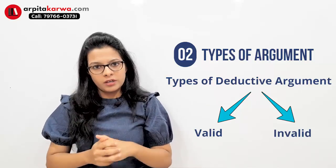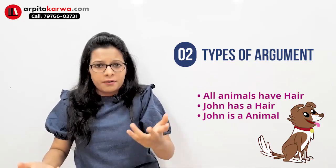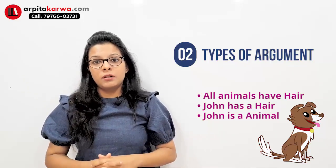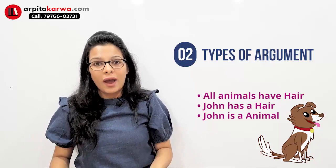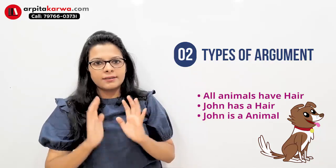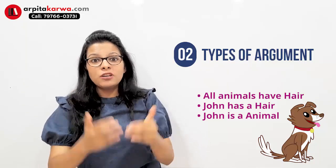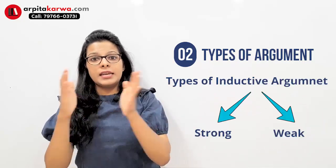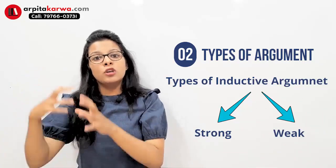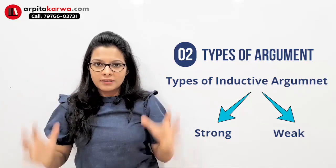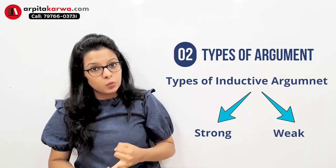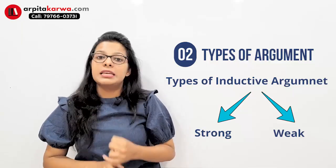These two categories are further subdivided. Deductive arguments have two kinds: valid arguments and invalid arguments. For example, 'All animals have hair' and 'John has hair,' therefore 'John is an animal' — this is invalid, because having hair doesn't make John an animal. Similarly, inductive arguments are divided into strong arguments and weak arguments. You must be aware of what is valid, invalid, strong, and weak in the context of these argument types.